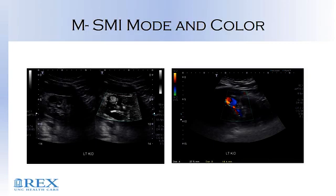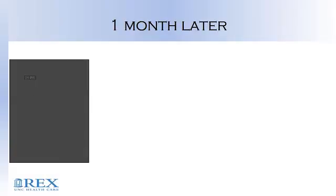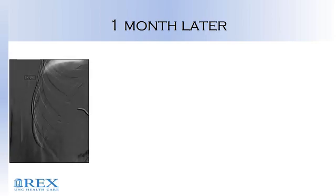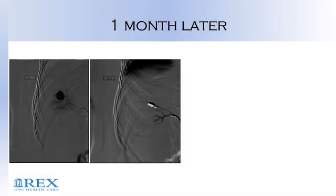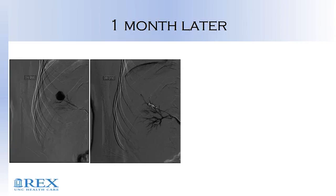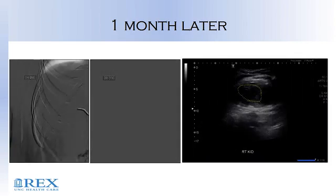This person thought they got stabilized and checked themselves out of the hospital. They came back in the middle of the night a month later, had a CTA, and this is the contralateral kidney. This was not there when we first did this a month ago. They went and did a coiling of this, and this is what the ultrasound looks like.